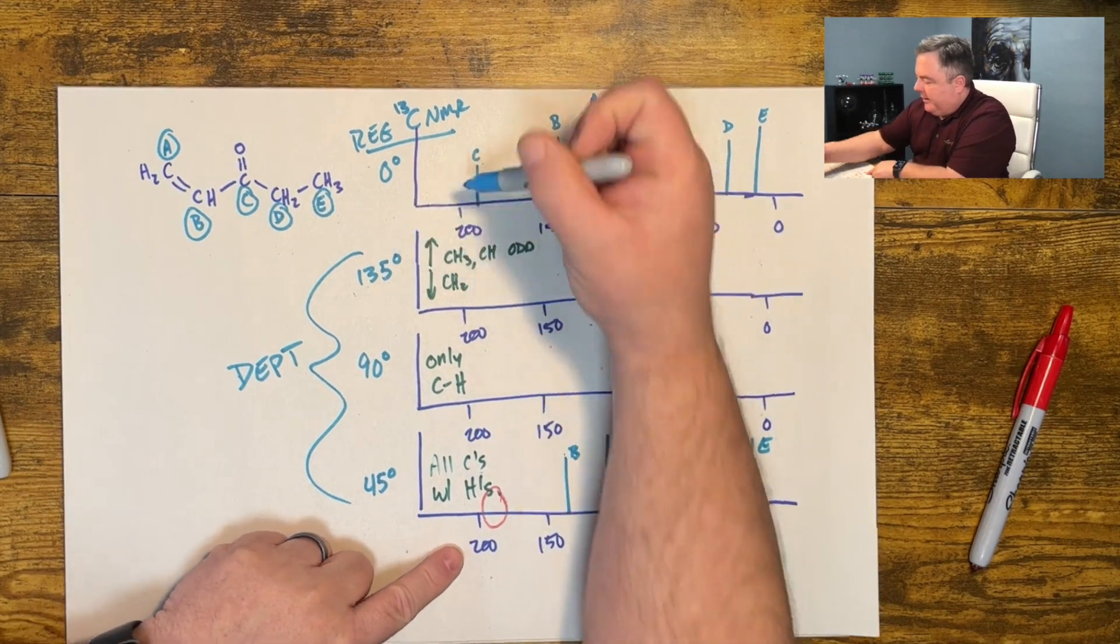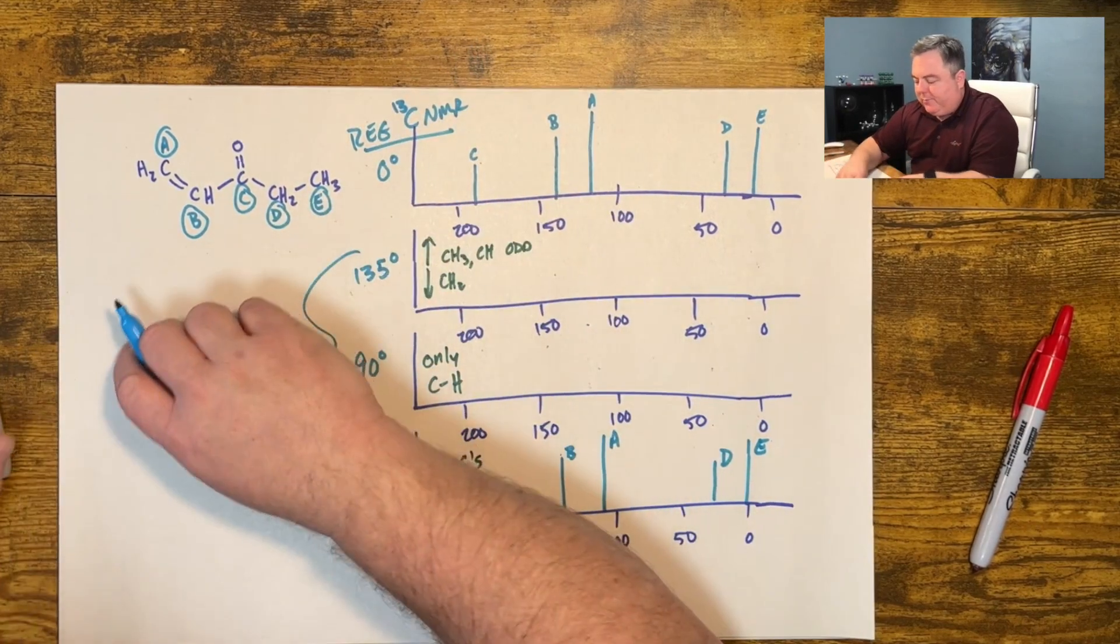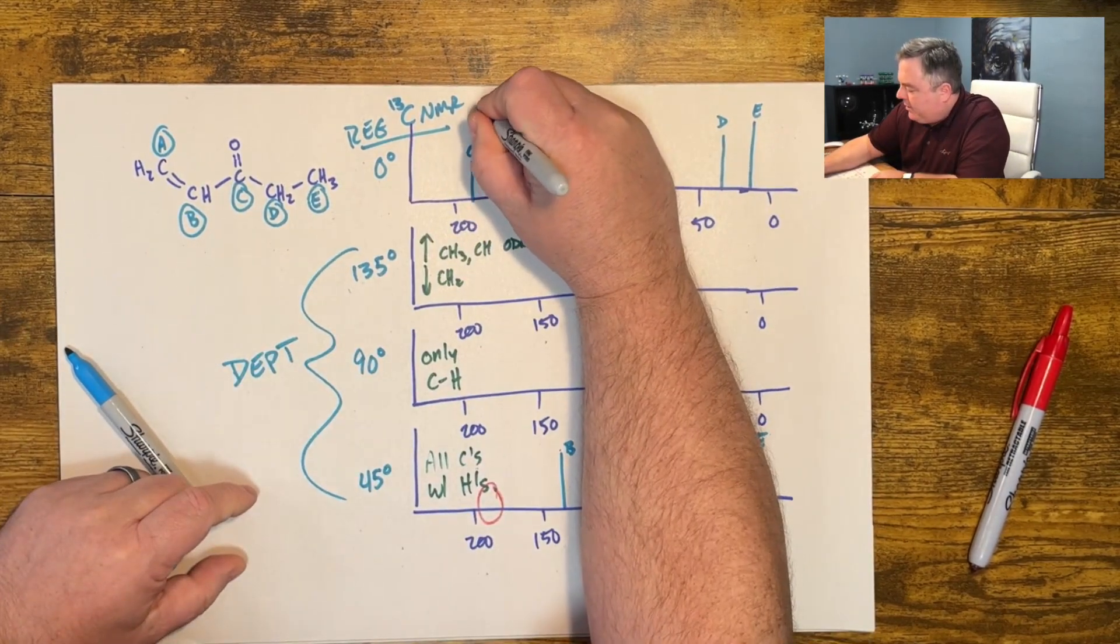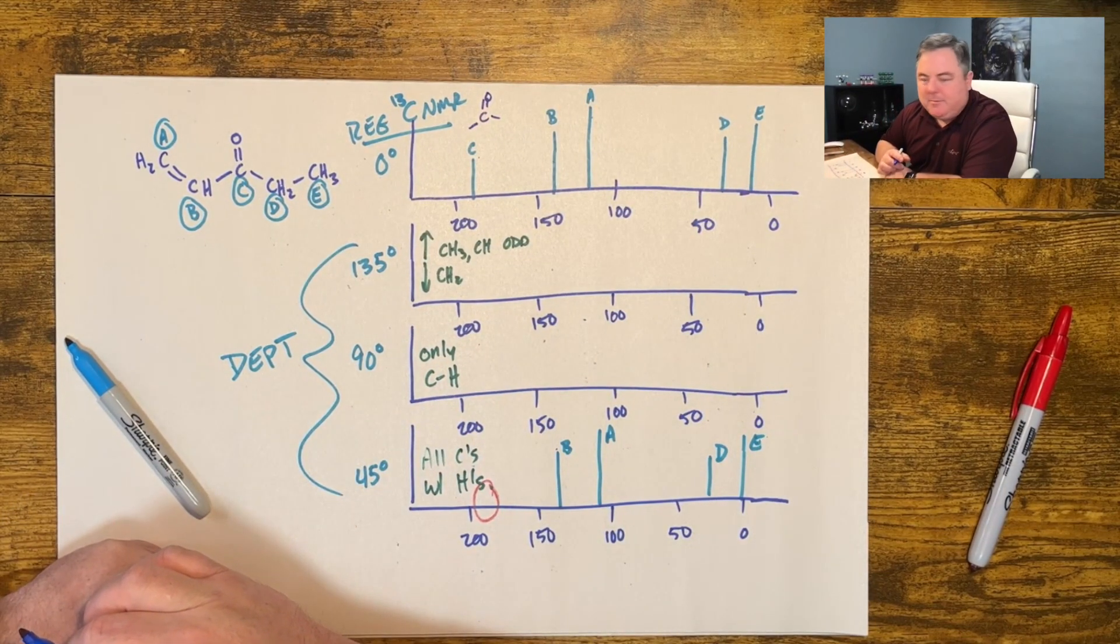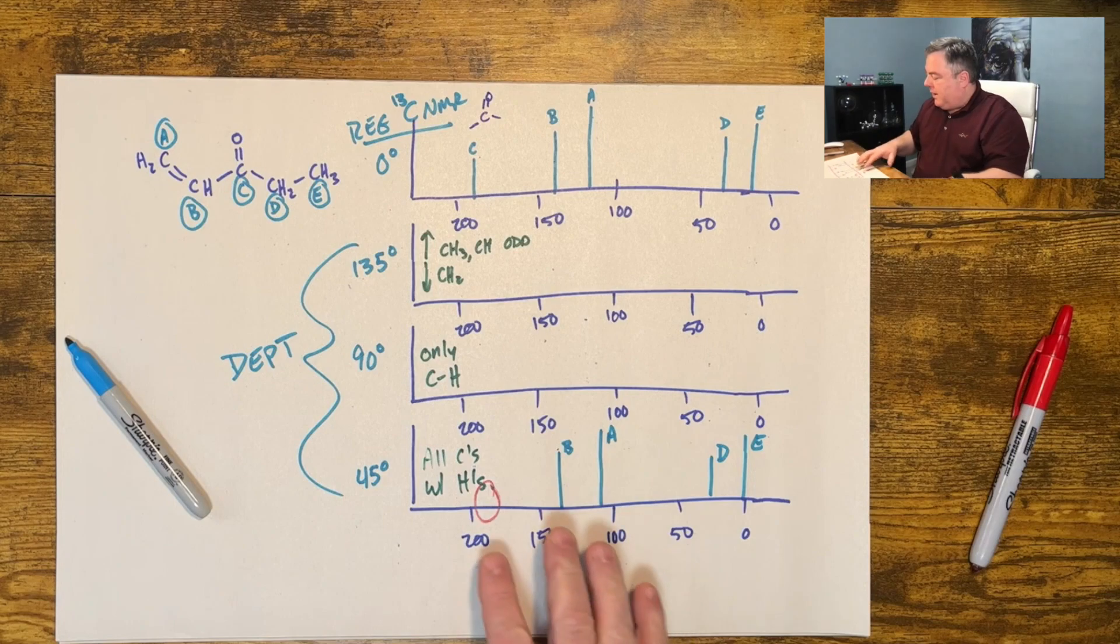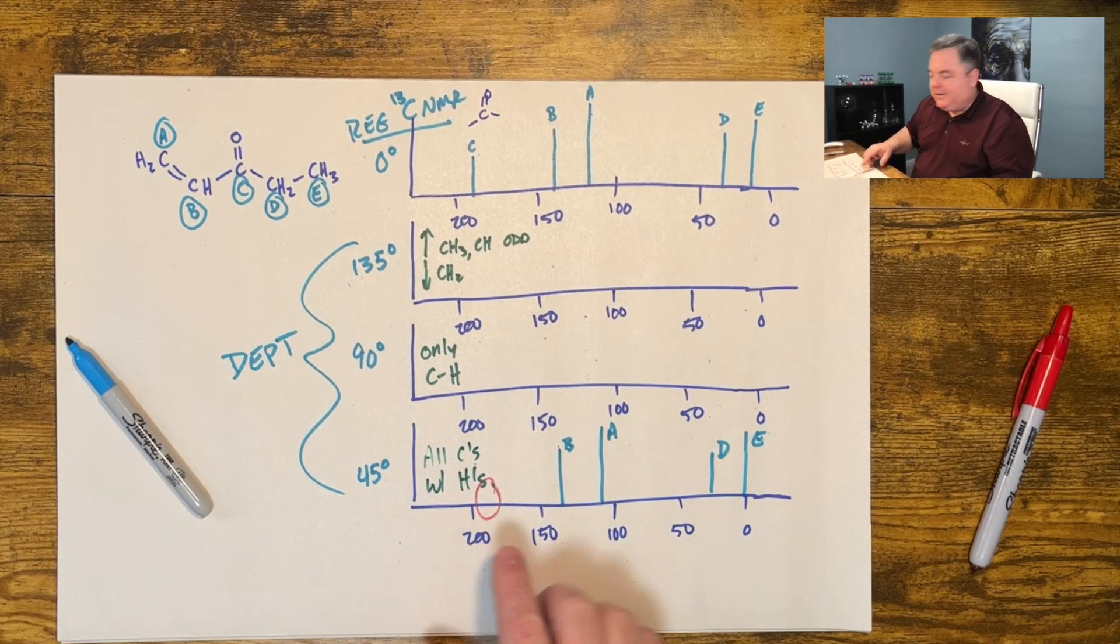So we're saying these have hydrogens but this one does not. So this one being out around 200 is probably a carbonyl and it has no hydrogens on it. It's not an aldehyde. That tells us which carbons don't have hydrogens and which ones do.